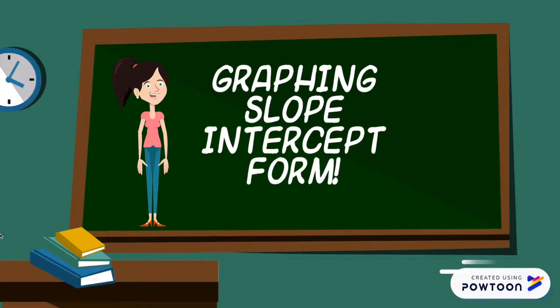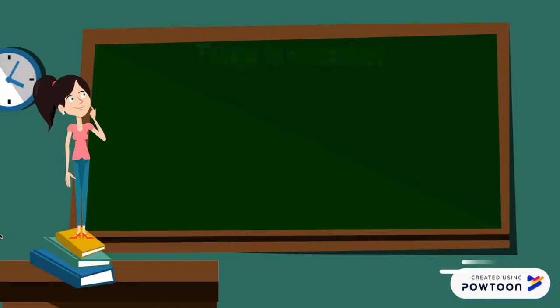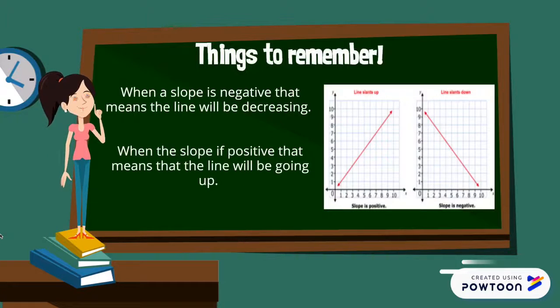This is my little friend. She's gonna help me explain graphing with slope-intercept form. We are gonna start off today with a positive slope, but later we're gonna move on to the negative. Things to remember: when a slope is negative, that means the line will be decreasing, and when the slope is positive, that means the line will be going up, so increasing.